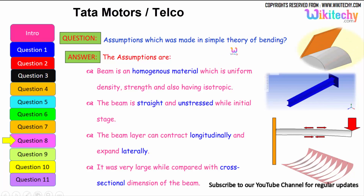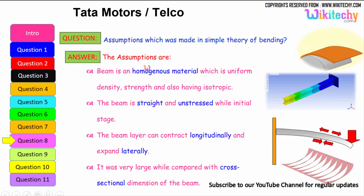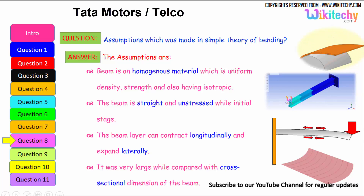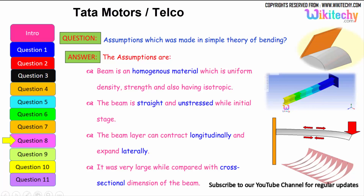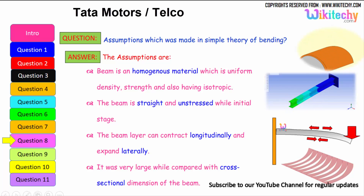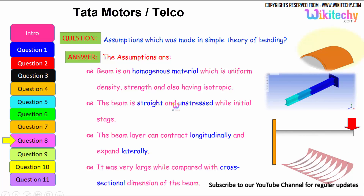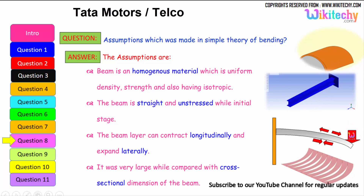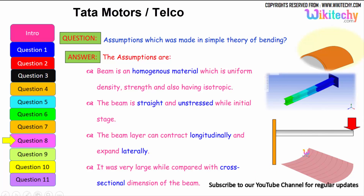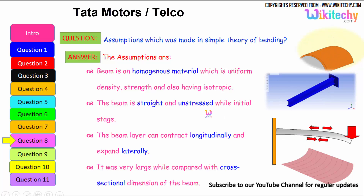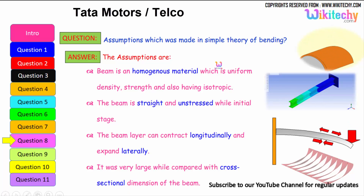What are the assumptions made in the simple theory of bending? The assumptions are: the beam is a homogeneous material of uniform density, strength, and is isotropic. The beam is straight and unstressed in the initial stage. The beam can contract longitudinally and expand laterally. The beam's span is very large compared with the cross-sectional dimensions of the beam.